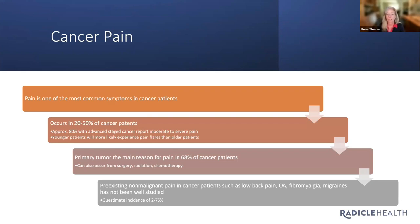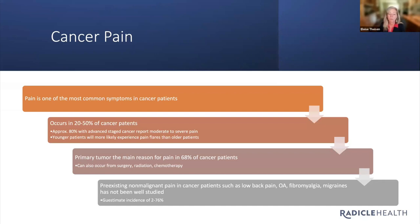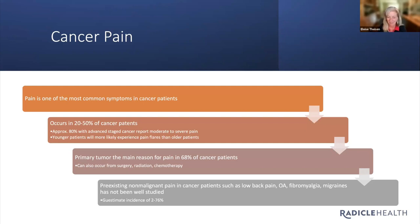Younger patients are more likely to experience pain flares. In older patients, we'll see primary tumors as the main reason for pain in about 68% of cancer patients, but we can also see pain occur from surgery, radiation, and even chemotherapy itself. Preexisting non-malignant pain in cancer patients — like low back pain, osteoarthritis, fibromyalgia, migraines — hasn't been well studied, and estimates range from 2 to 76%, which is basically their way of saying we just don't know.